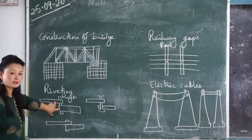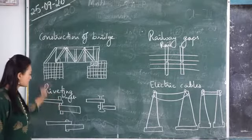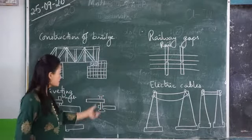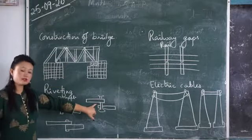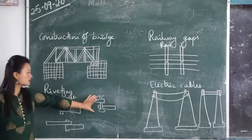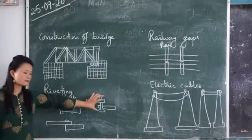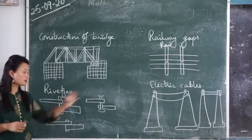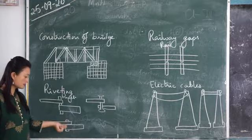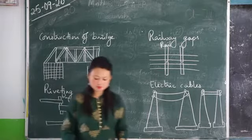The third application is riveting. When you want to join two metal plates together, a rivet is sorted between them. You start heating the rivet — when it becomes very hot, you continuously beat it. After making it very hot, it is let to cool. When it cools, the rivet contracts and the metal pieces join together tightly.